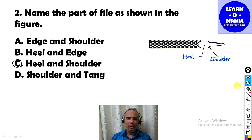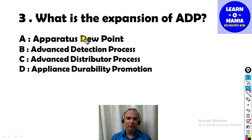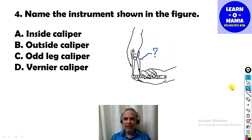The next MCQ is: What is the expansion of ADP? The answer is option A — ADP stands for Apparatus Dew Point. The next MCQ: Name the instrument shown in the figure.